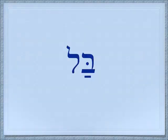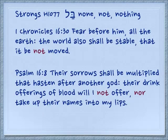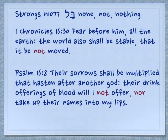He's ready to take the bride for Isaac. 'Seeing Jehovah have prospered my way, send me away that I may go to my master.' There is a very similar particle which is bal. Don't confuse this with Baal, which are the false gods — this is just two letters, bal. 1 Chronicles 16.30: 'Fear before him, all the earth. The world also shall be stable, that it be not moved.' Psalm 16.8: 'Their sorrows shall be multiplied that hasten after another god. Their drink offerings of blood I will not offer, nor take up their names into my lips.' Not, not.